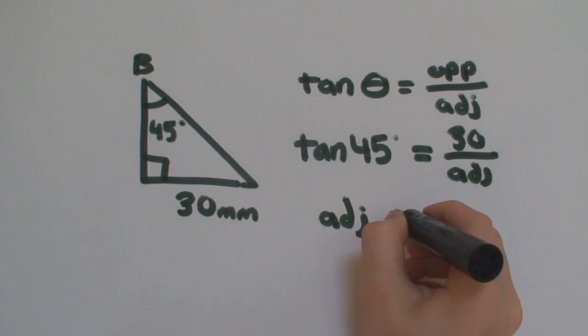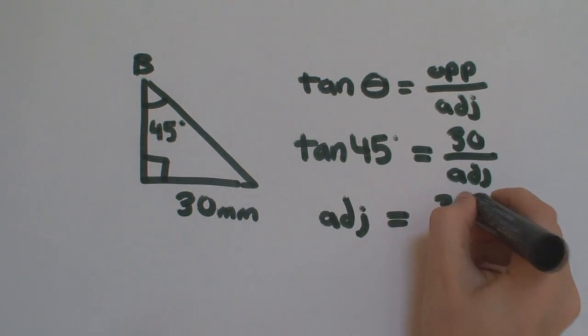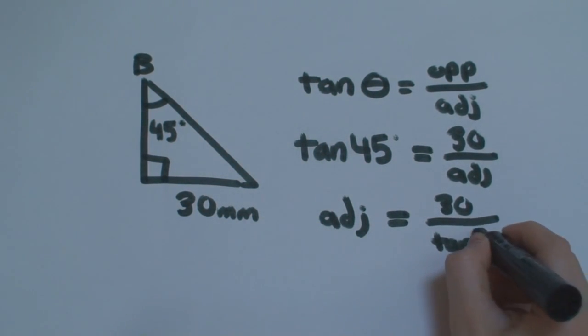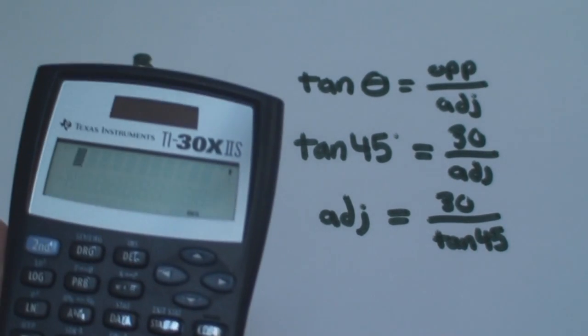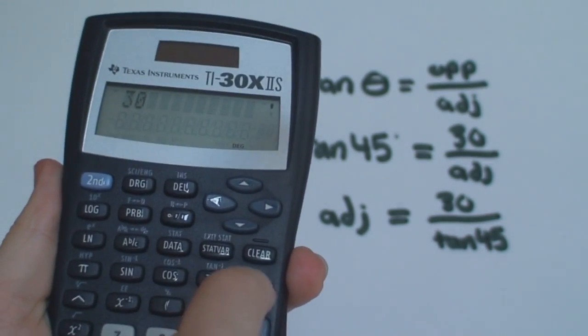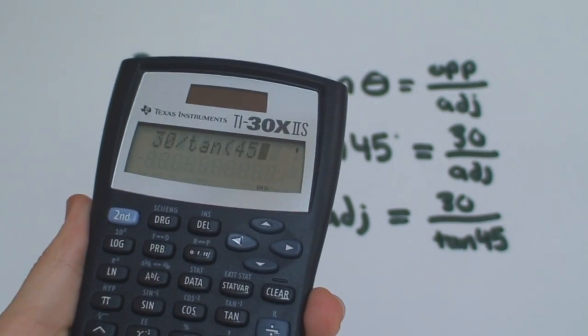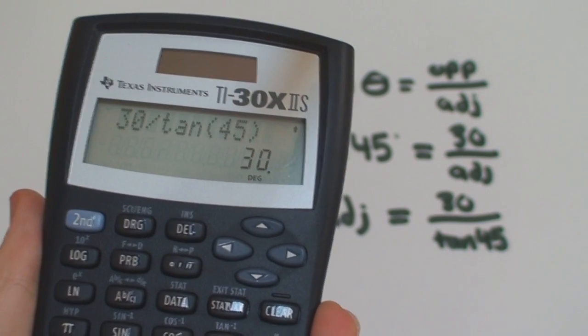Once we've isolated the only variable that we don't know, it becomes adjacent side is equal to 30 millimeters over tangent 45 degrees. Once again, we bring our calculator, and we type in 30 divided by tangent 45. Enter. We have an even 30 millimeters.